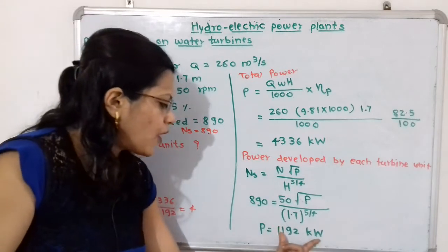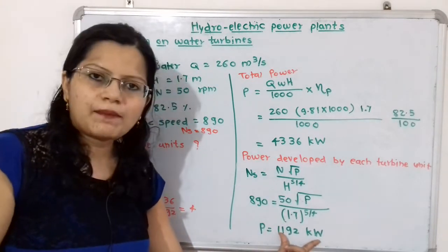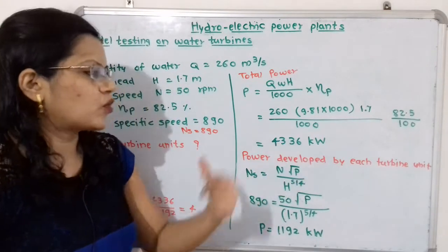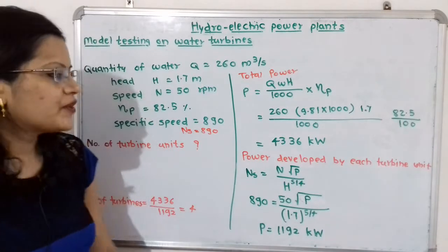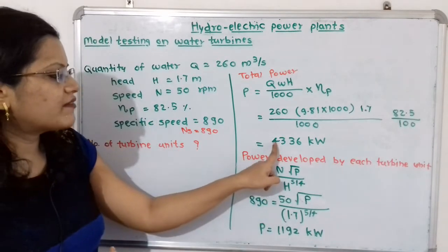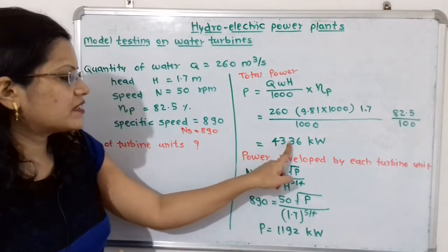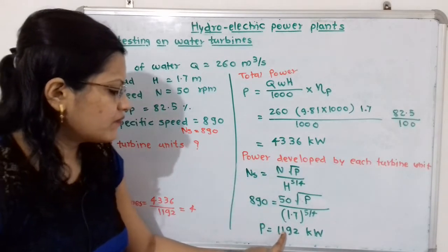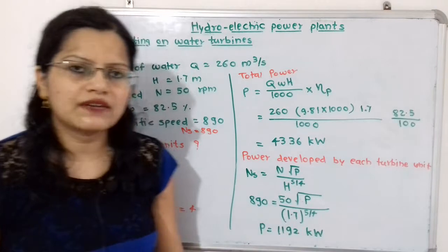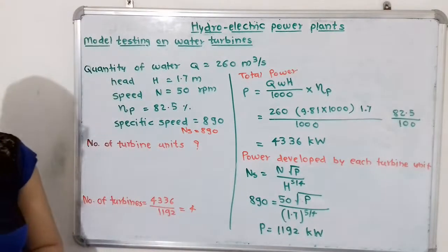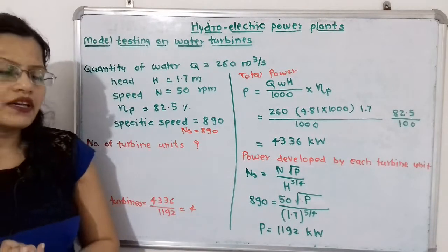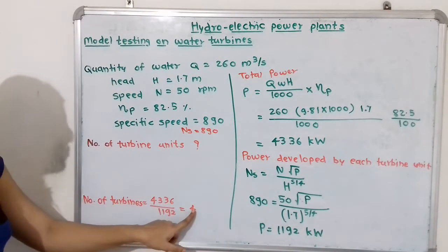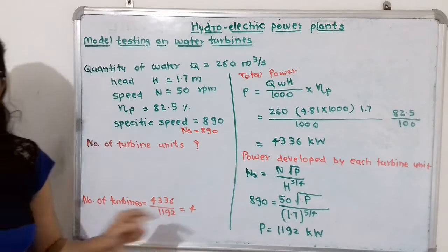Now that we have the total power and the power per turbine unit, we divide 4336 by 1192 to get the number of turbine units required. The number of turbines is equal to 4.